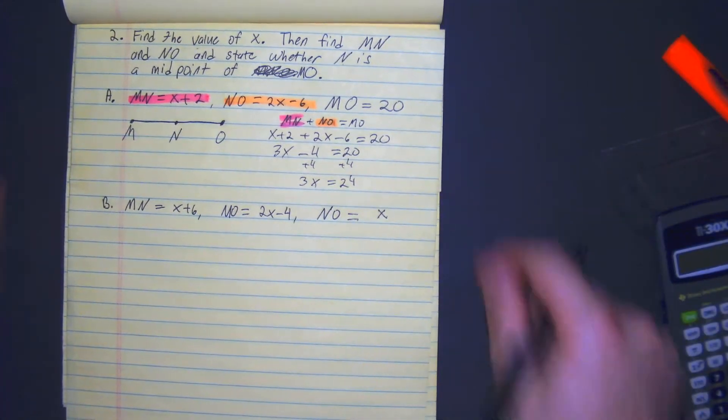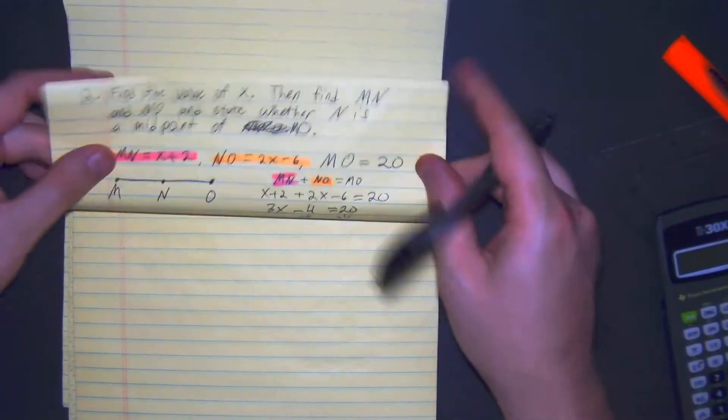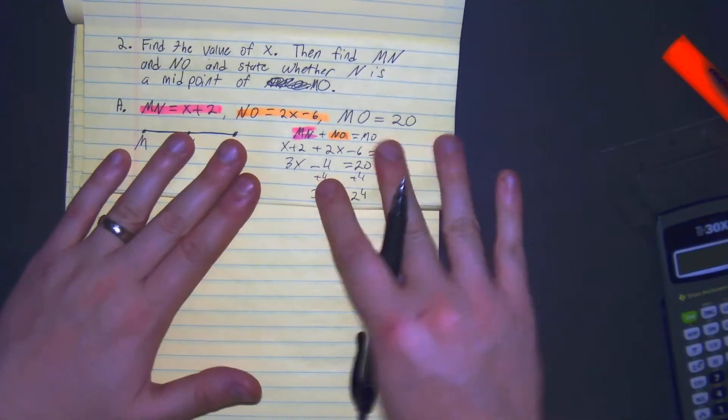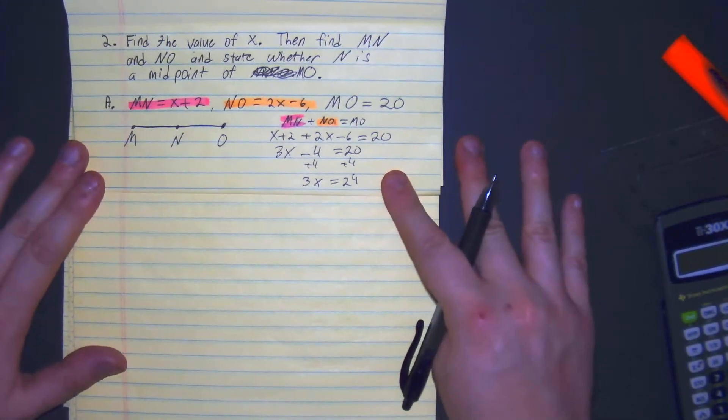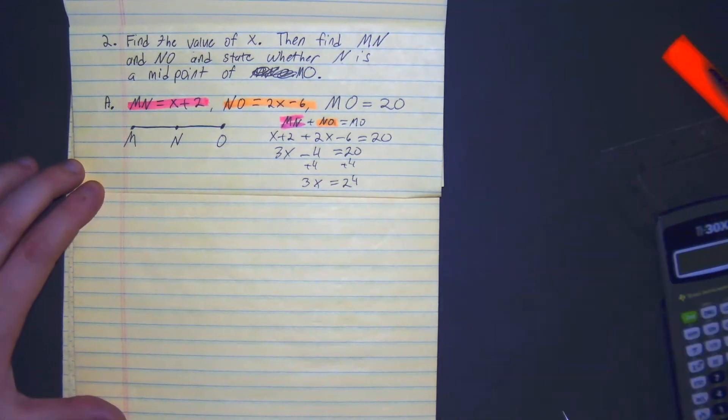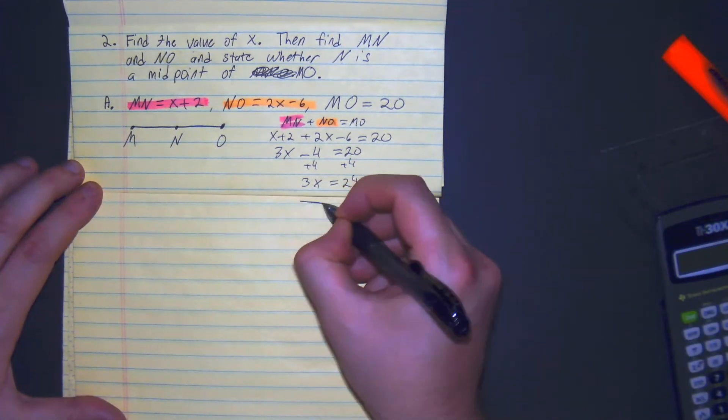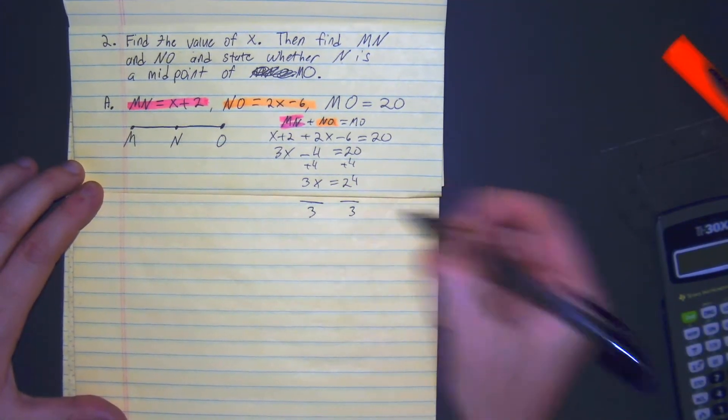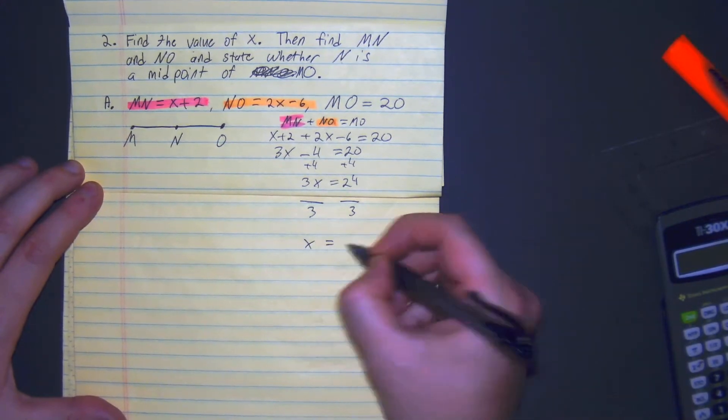I need to make a little bit more room, so let me just slide this over. So then we have 3x equals 24. You divide both sides by 3. You get x equals 8.